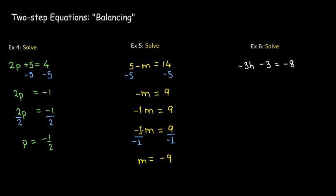In the next example, I have negative 3h and negative 3 equaling negative 8. The opposite of negative 3 is positive 3, so I add 3 to both sides. Then I divide both sides by negative 3, remembering that a negative divided by a negative is a positive, giving me h equals 5 thirds.